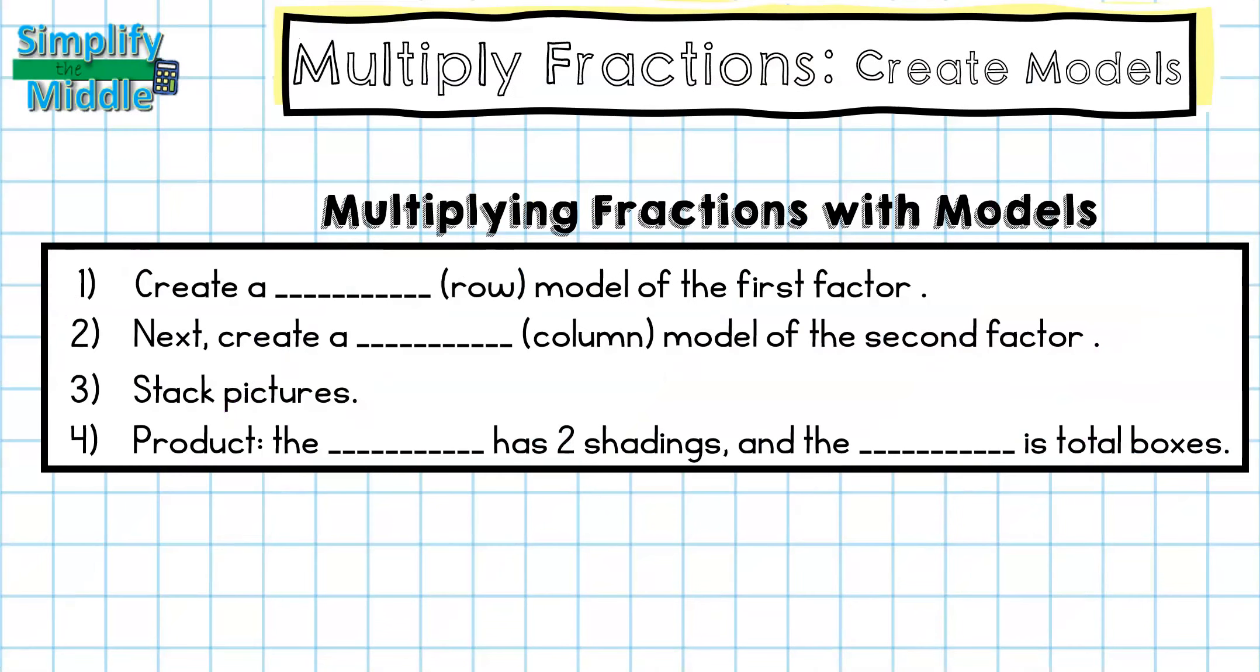Let's wrap up. For multiplying fractions with models, you're going to first create a horizontal row or model for the first factor. Next you would create a vertical or column model for the second factor. Stack your pictures, and the product or your answer for the numerator will have two shadings, and the denominator is the total number of boxes.